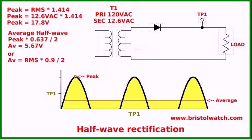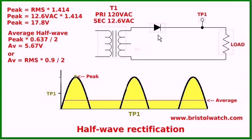Here is your very basic diode transformer circuit. This is called half-wave rectification. If you understand anything about sine waves, they actually have 360 degrees. What you don't see below the line is the missing half cycle. Which half cycle you get depends on which way the diode is turned.